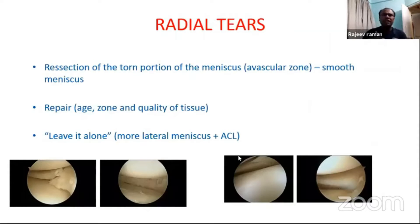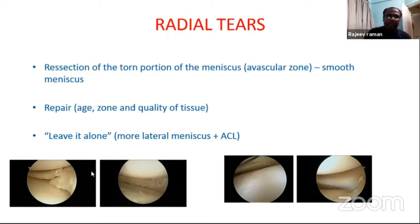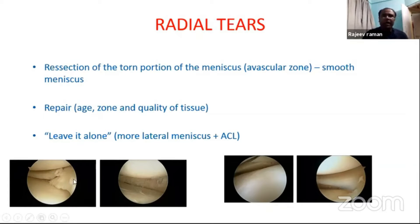Radial tear is one of the most common tears. As I told you previously, most of these tears are symptomatic — the patient will have pain and some amount of clicking inside the joint. This radial tear will not stay as is; if it is extended from front to back, it will just get converted into a bucket handle tear.